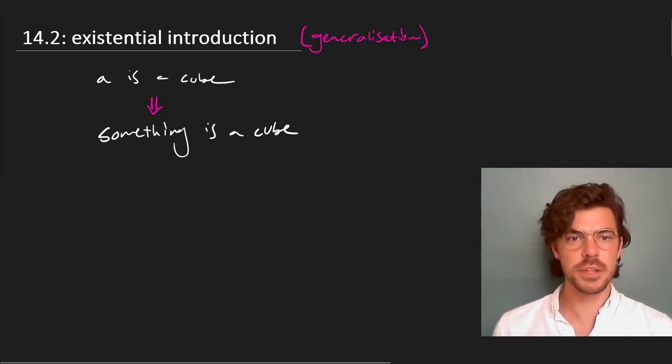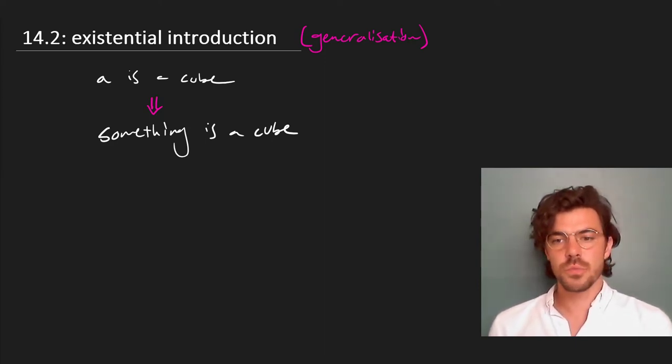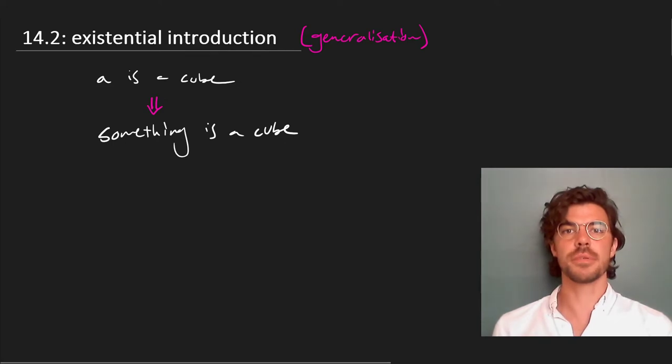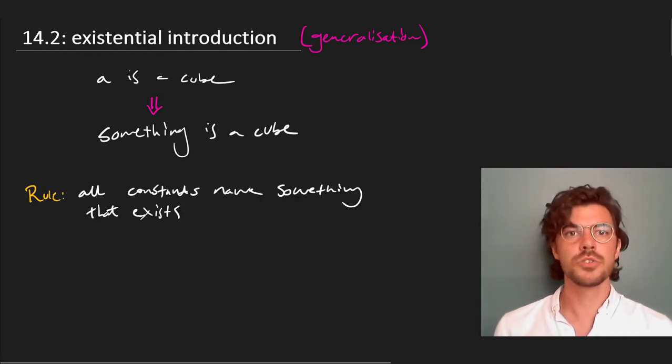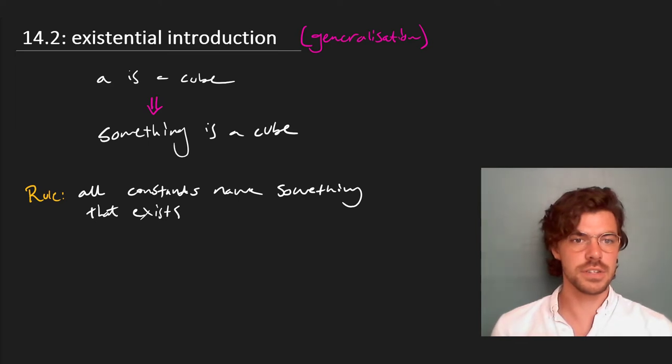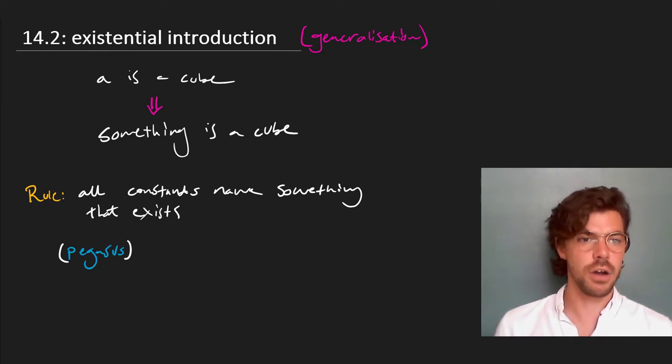but it actually faces a bit of a problem that's worth keeping in mind because we have to state, remember from our earlier video on constants, this rule that all constants have to name something. So we saw that we have no constant for things that don't exist, for instance, Santa or Pegasus, and here's why.